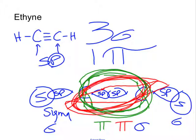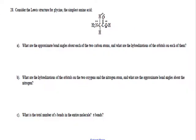To summarize: a single bond is one sigma. A double bond is one sigma and one pi. A triple bond is one sigma, one pi, and one pi.